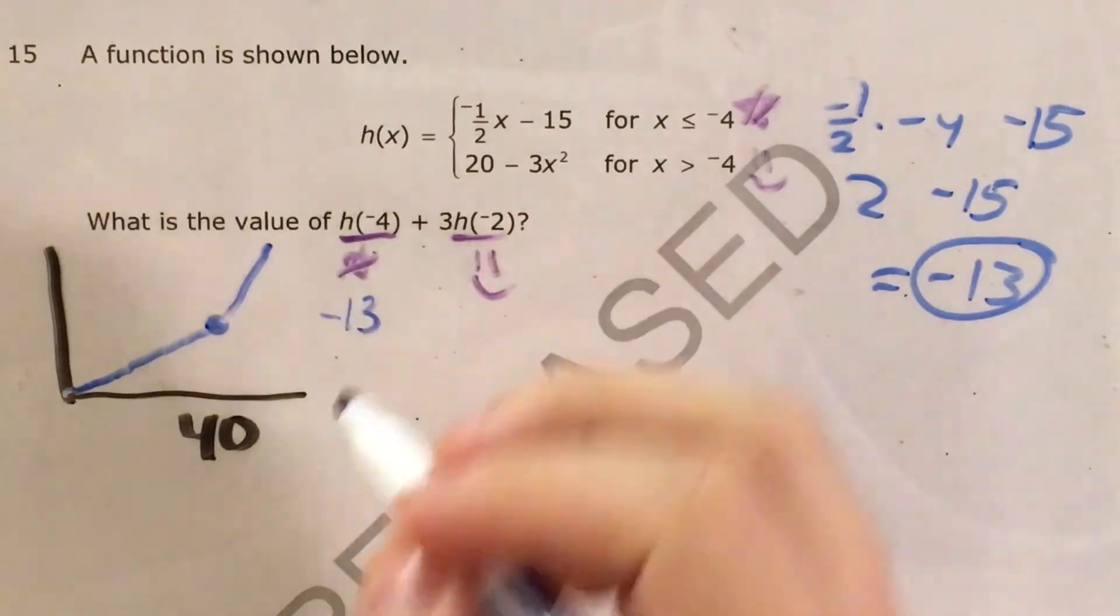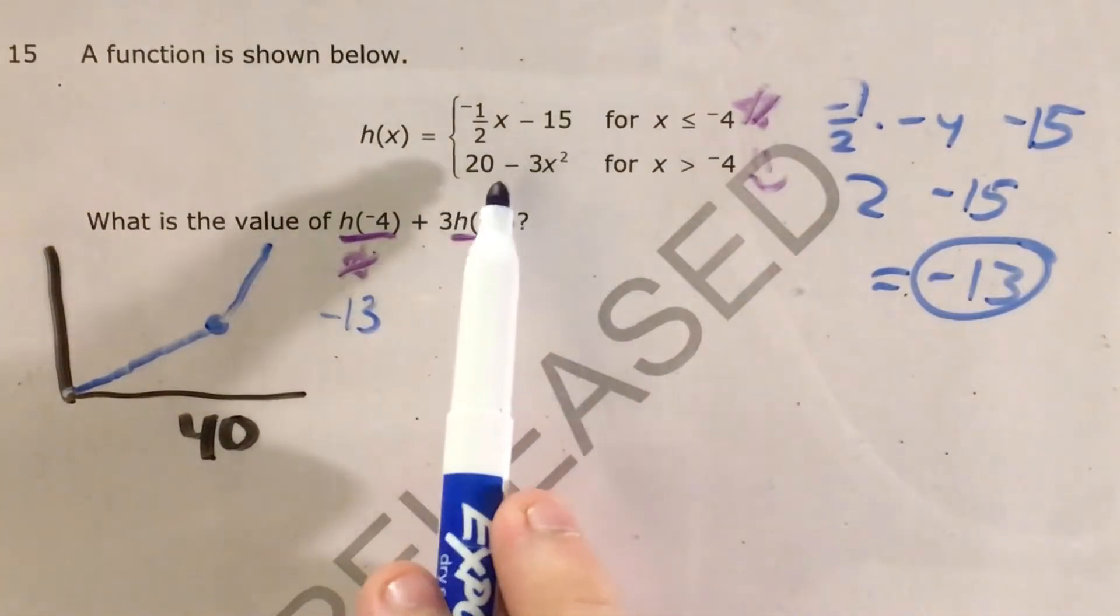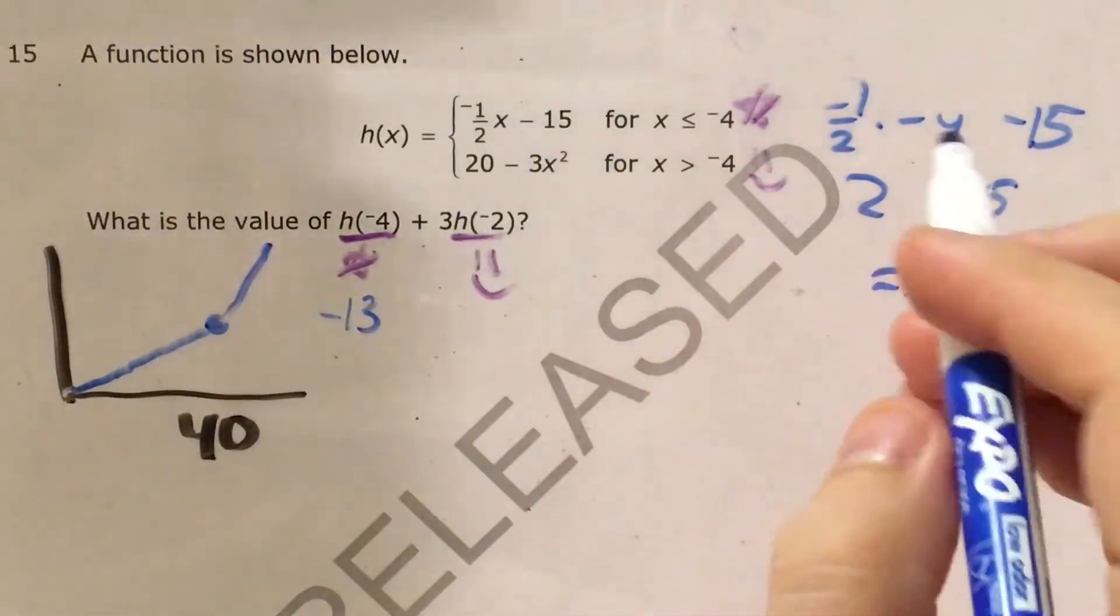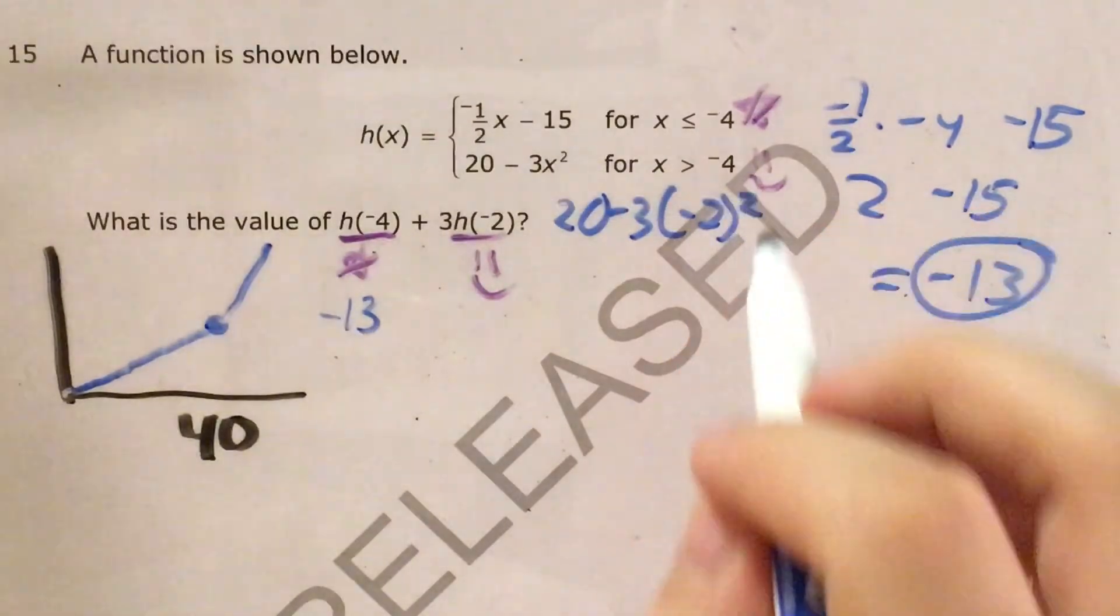So negative 13 is h of negative 4. And now here, I plug in negative 2 to 20 minus 3x squared. 20 minus 3 times negative 2 squared.